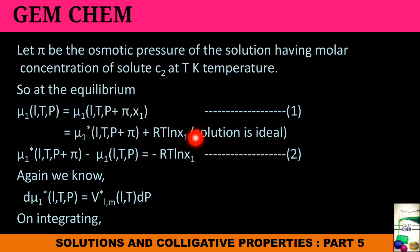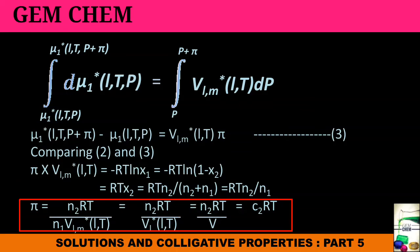This can be further elaborately written if we consider that the solution is ideal to be as in the pure state plus RTlnX1. Take RTlnX1 in this side and this one is taken in the right hand side, so we get equation 2. Again we know that d mu i star, that is for the pure state, liquid state temperature T and pressure, the volume pure volume into dP is being present. So on integrating, we get equation 3.